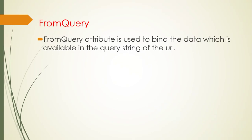If you are passing data in multiple places — for example, route, body, query string, header, etc. — and you want to bind the data only from the query string, in this scenario we can use the FromQuery attribute.